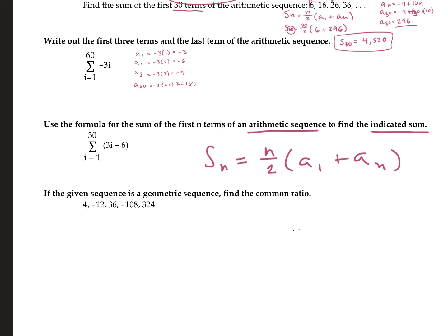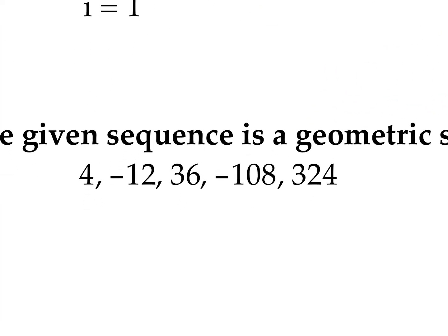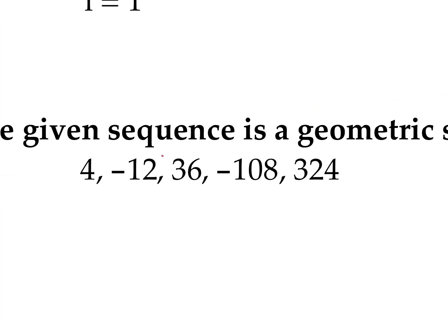If the given sequence is a geometric sequence, find the common ratio. For this, we just take the second term and divide it by the first — negative 12 divided by 4 — which is negative 3.